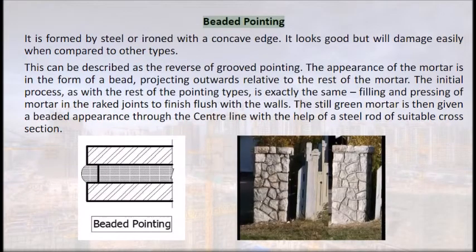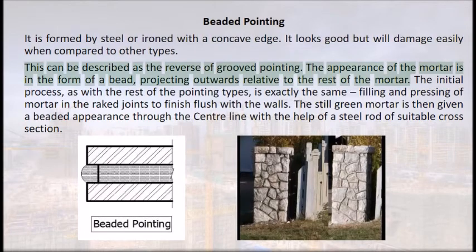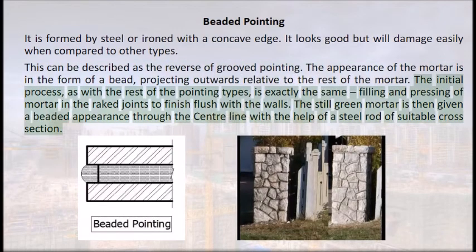Beaded pointing is formed by steel or iron with a concave edge. It looks good but will damage easily compared to other types. It is the reverse of grooved pointing — the mortar appears in the form of a bead projecting outwards. The same steps of filling and pressing mortar in rake joints flush with walls apply, after which the still-green mortar is given a beaded appearance along the center line with the help of a steel rod of suitable cross section.